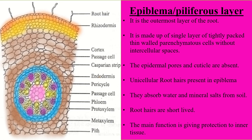Epiblemma is also called the proliferous layer or rhizodermis. In the picture, the rhizodermis layer is brown in color. It is the first layer, a single layer of tightly packed thin-walled parenchyma cells found without intracellular space — meaning there is no space found between the cells.